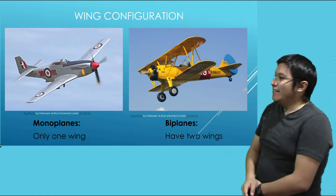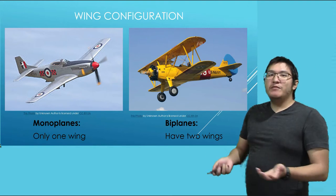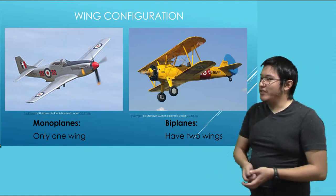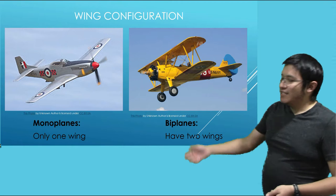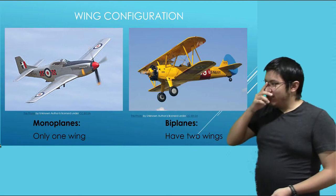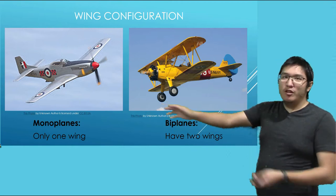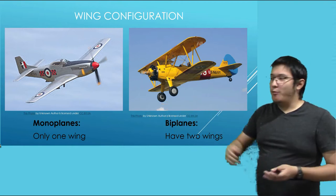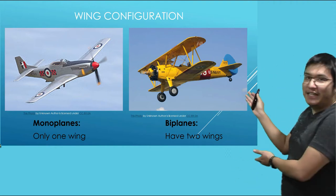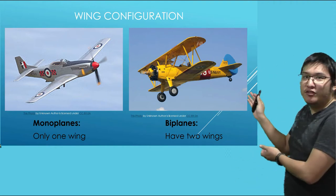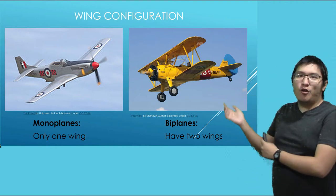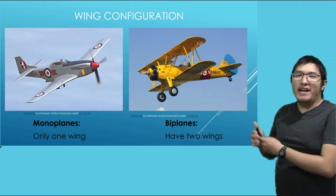Wings have different configurations when it comes to aircraft. One of them is monoplanes — monoplanes only have one set of wings. As opposed to biplanes, which have two sets of wings. It's kind of like old World War I aircraft.